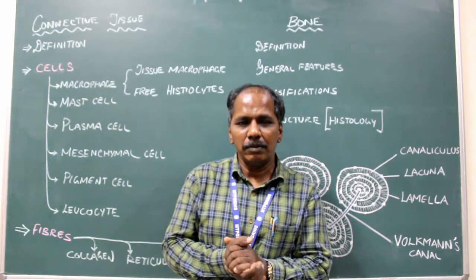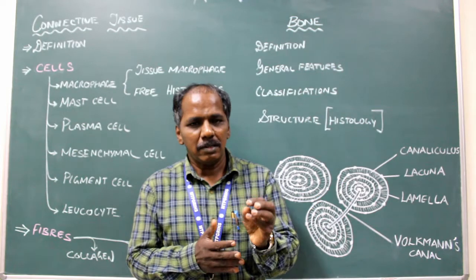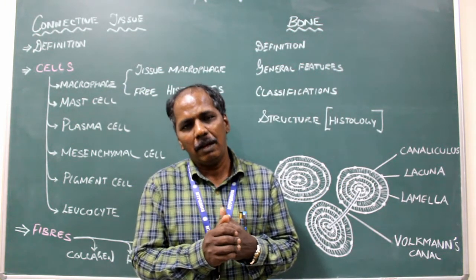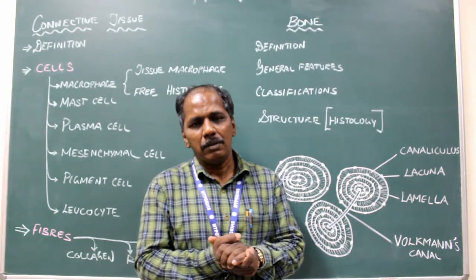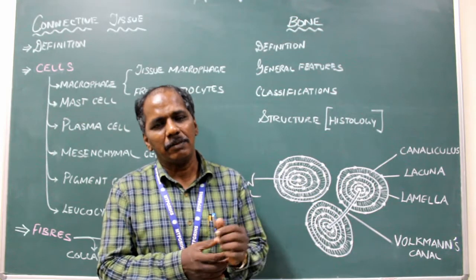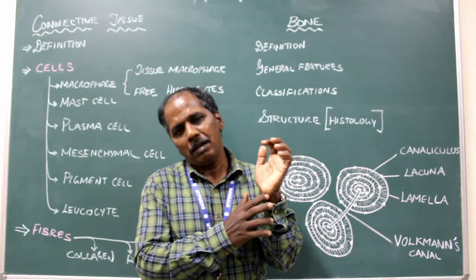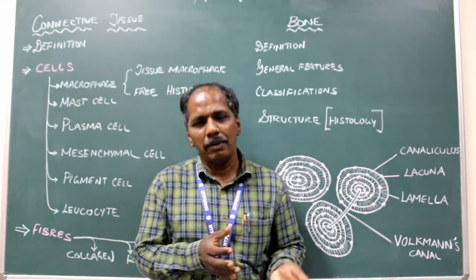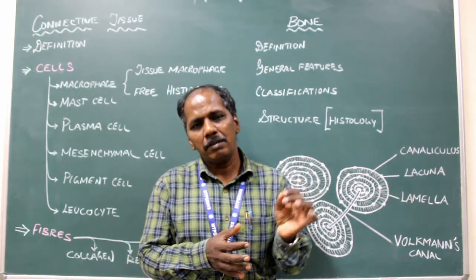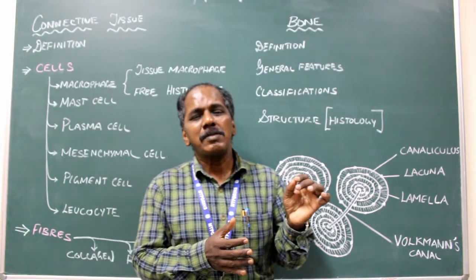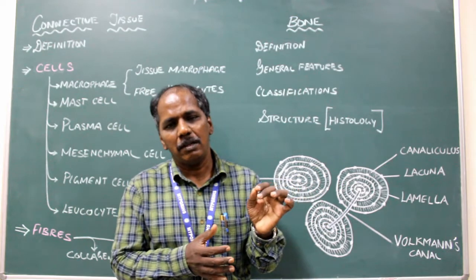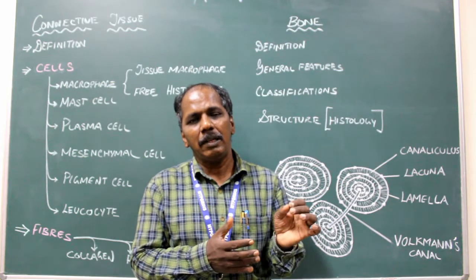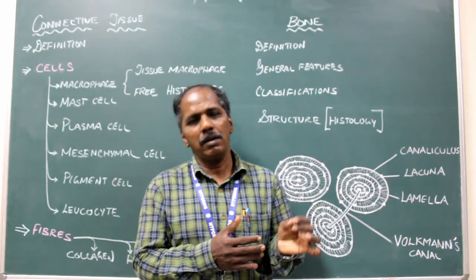Sesamoid bone — what is a sesamoid bone? It is a bone which is enclosed or covered by a tendon or ligament. Example: the patella is the largest sesamoid bone. The pisiform bone in the carpals is also an example of a sesamoid bone. Fabella is a sesamoid bone present in the gastrocnemius or calf muscle in the leg. These are some of the bones of the upper and lower limb — each bone will be covered in detail during osteology class.